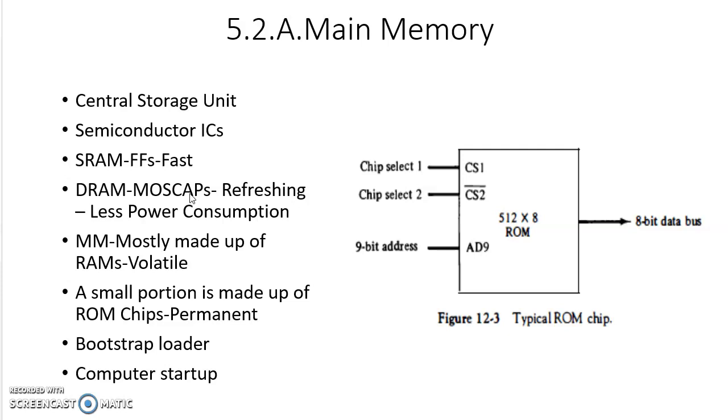DRAMs are made up of MOSCAPs which is a capacitor made out of metal oxide semiconductor field-effect transistor. The drawback of this DRAM is they need continuous refreshing after some fixed interval like 20 milliseconds. But the advantage is they consume very less power. They are relatively slower than SRAM.